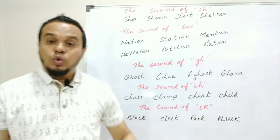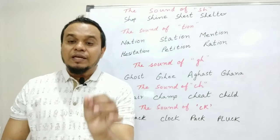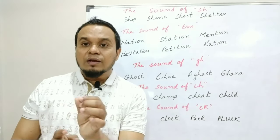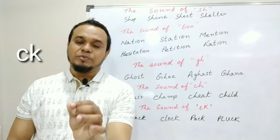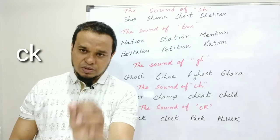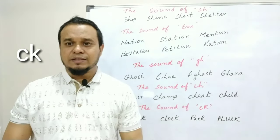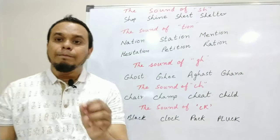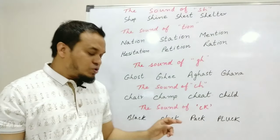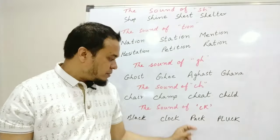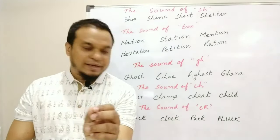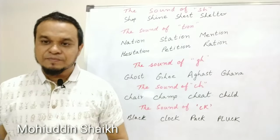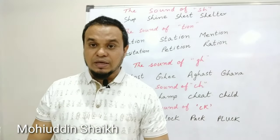The last rule is CK. In English, if you hear a 'k' sound at the end of a word, 99% of the time we write that 'k' sound as CK. For example: B-L-A-C-K: Black, C-L-O-C-K: Clock, P-A-C-K: Pack, P-L-U-C-K: Pluck. So today you have learned five rules.